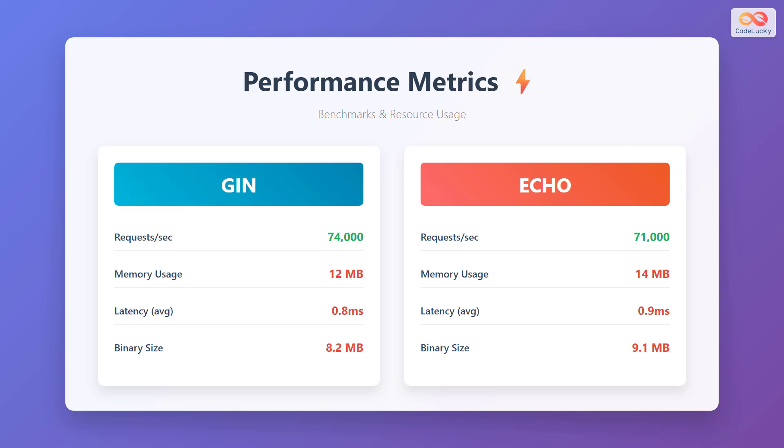When it comes to memory usage, JIN demonstrates superior efficiency with only 12 megabytes of memory consumption compared to ECHO's 14 megabytes. This lower memory footprint makes JIN particularly attractive for microservices and containerized environments. Average latency shows similar results, with JIN achieving 0.8 milliseconds compared to ECHO's 0.9 milliseconds. The binary size comparison shows JIN producing slightly smaller executables at 8.2 megabytes versus ECHO's 9.1 megabytes, though both frameworks offer exceptional speed and efficiency.